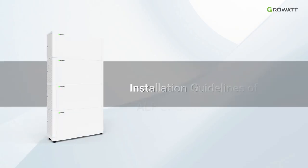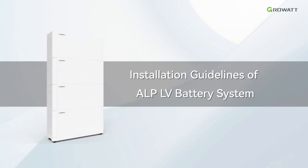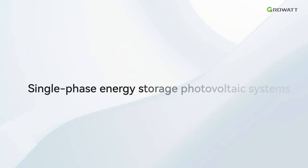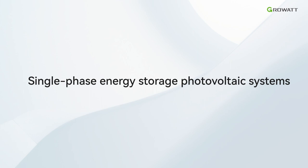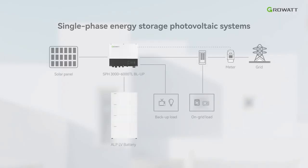Today, we will introduce the installation process of the GrowWatt ALP-LV battery. Here is the diagram of the single phase energy storage photovoltaic systems. The inverter for this system is the SPH 3-6KTL BL UP and the battery is the ALP-LV battery.